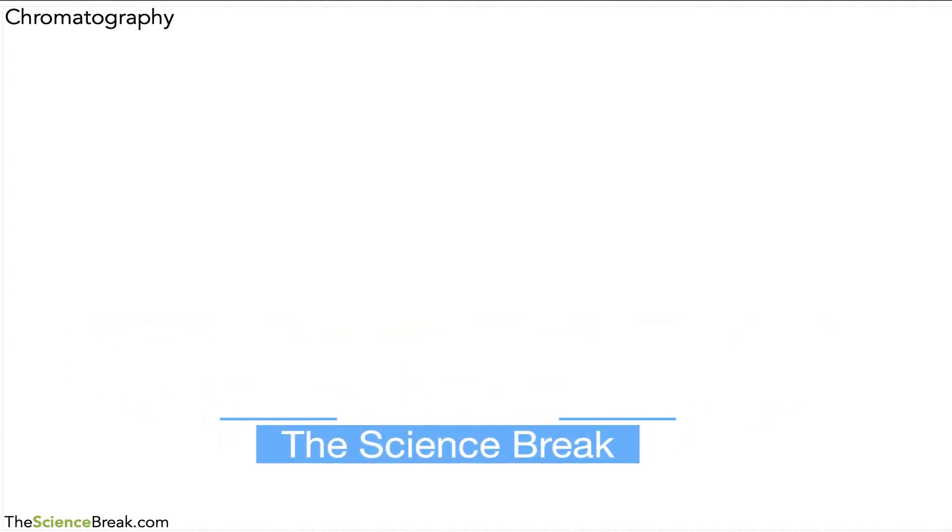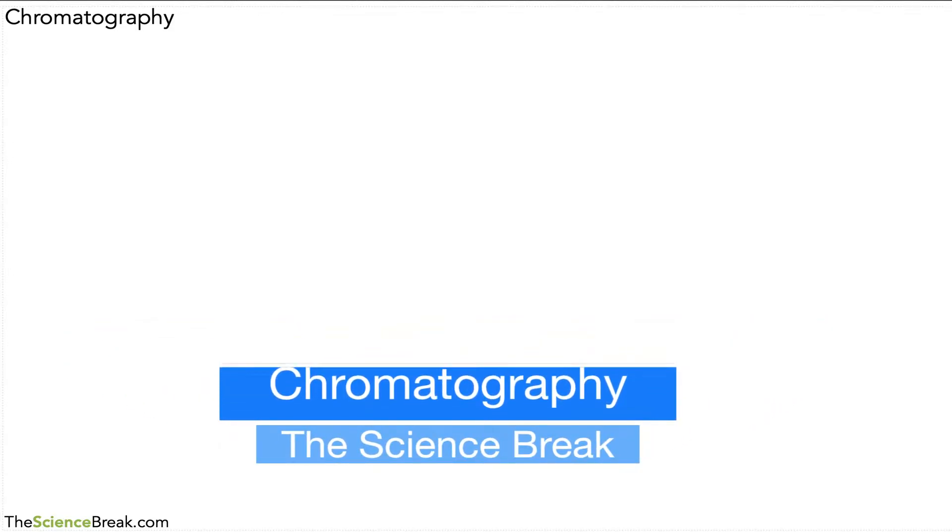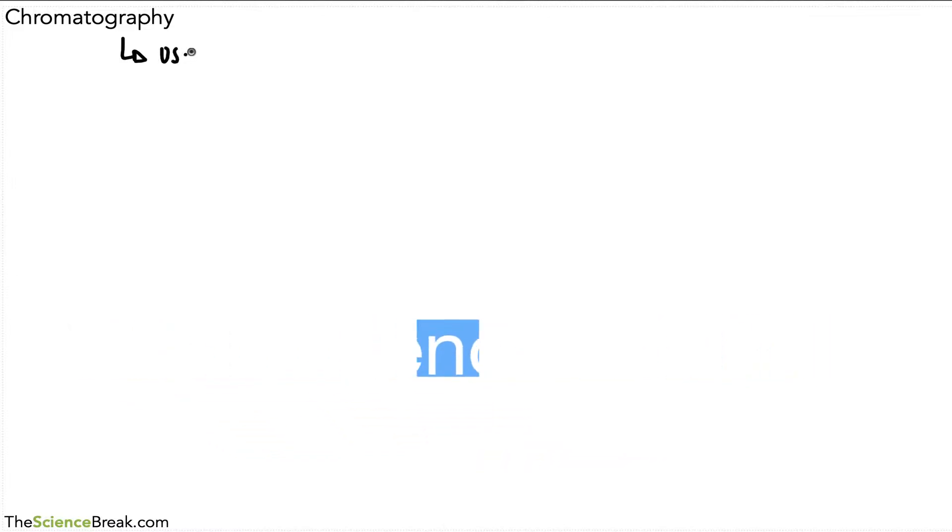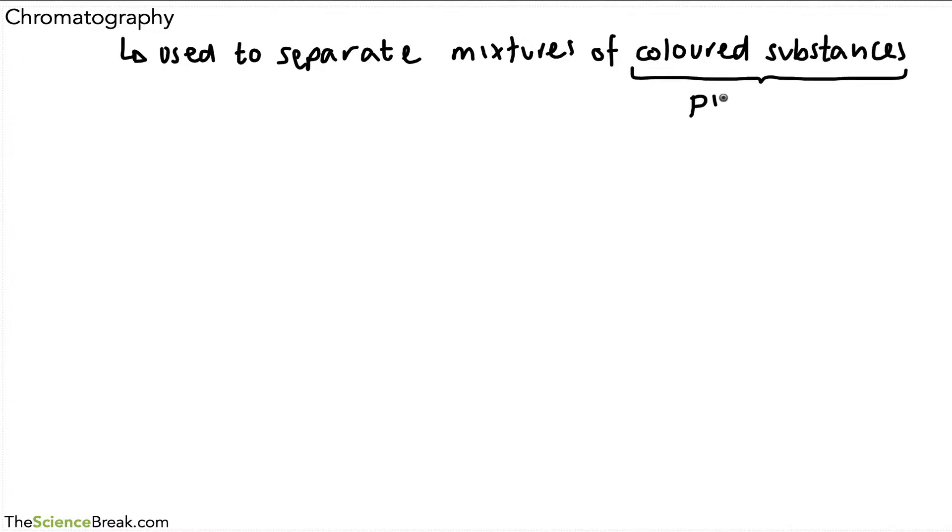Hello, today we're looking at chromatography, which is a method for separating out colored chemicals. Chromatography is used to separate mixtures of colored substances, and we can give those colored substances a name—we can call those pigments.